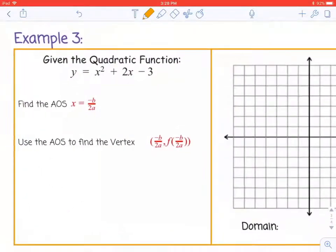we're going to start by finding the axis of symmetry. So a is 1, b is 2, and c is -3.